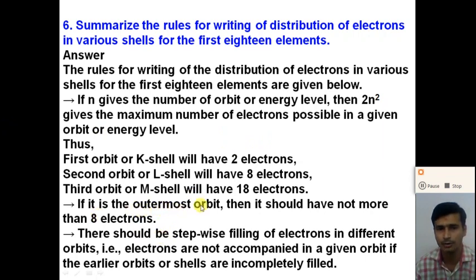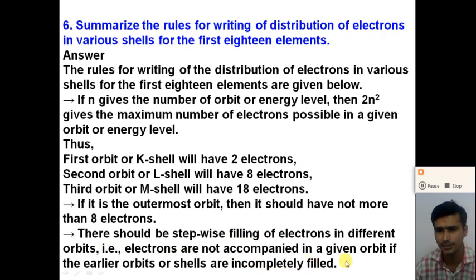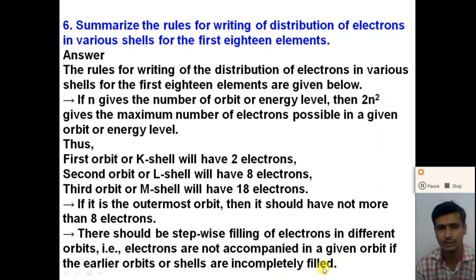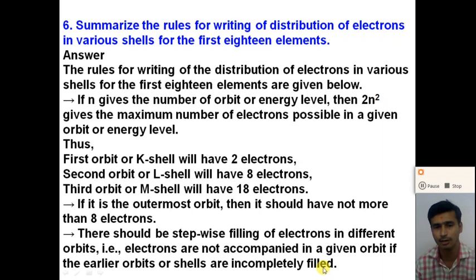The second rule: if it is the outermost orbit, it should have not more than 8 electrons. So the maximum electrons in the outermost orbit is 8. The third rule: there should be stepwise filling of electrons in different orbits. That means electrons are not accepted in a higher orbit if the earlier shells are incompletely filled. First the first orbit is completely filled, then the second, then the third.